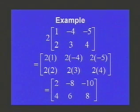That gives us the first row 2, negative 8, negative 10. Second row 4, 6, 8.